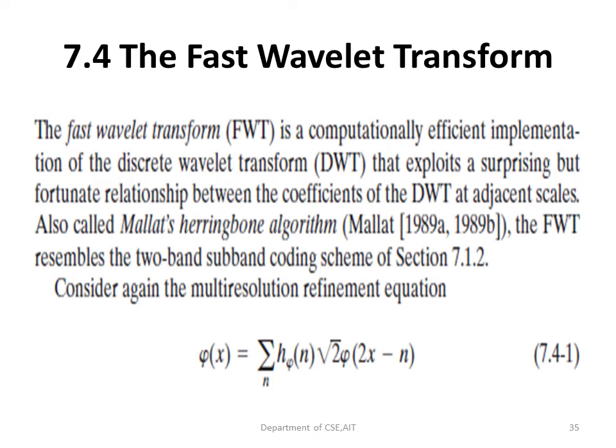The fast wavelet transform (FWT) is a computationally efficient implementation of the DWT, based on the relationship between the DWT coefficients at adjacent scales. These are also called Mallat's herringbone algorithm. The fast wavelet transform is similar to the two-band subband coding scheme studied previously. Consider the equation for φ(x) expressed in terms of h_φ and √2 φ(2x − n).